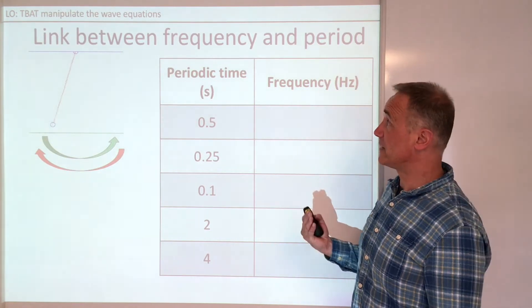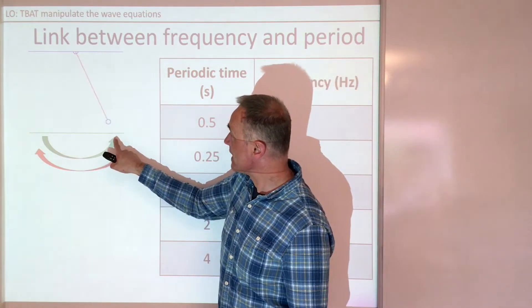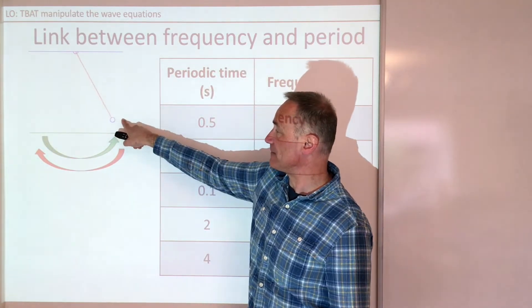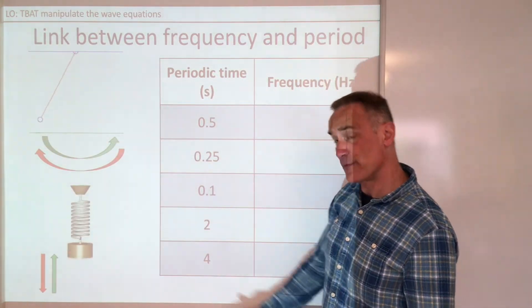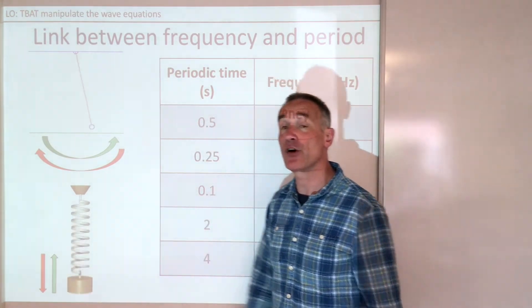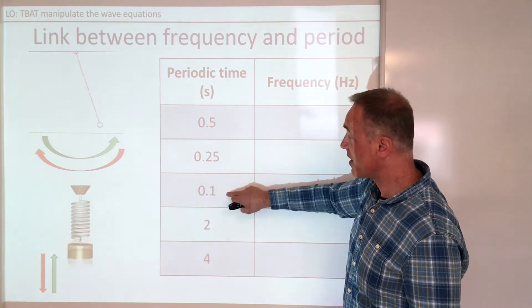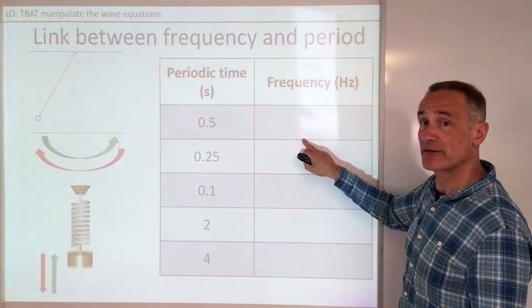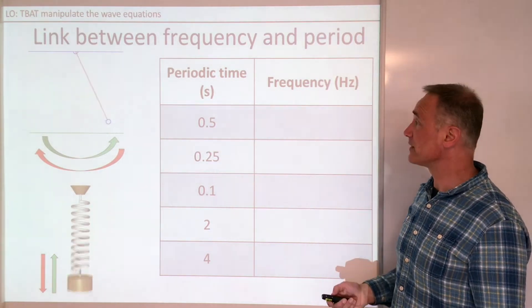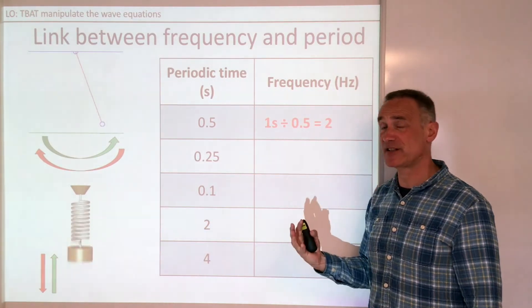Another way of looking at period and frequency is to think about oscillating objects like a pendulum. One oscillation is all the way over to the other side and back to the same point again. Just like a spring — you might see this in the exam. The spring oscillates up and down: going all the way to the bottom and back to the top is one oscillation. So if the period is 0.5 seconds, one second divided by 0.5 is two, so you can fit two oscillations into a second.